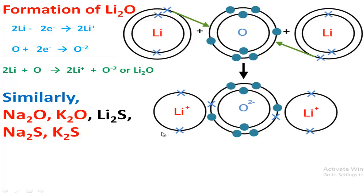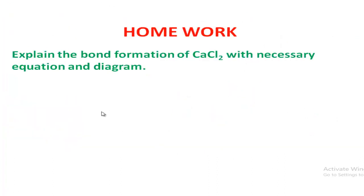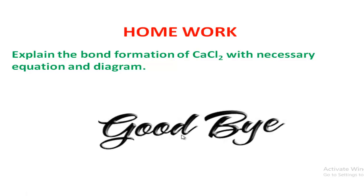You have to explain the language as I have given, and also include the diagram. For homework today, you have to explain the bond formation of calcium chloride with necessary equation and diagram. Please write this answer — try to write it in one page — take a clear picture and send it in the group. In the next class I will come with covalent bond. Thank you everybody and goodbye.